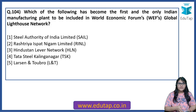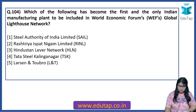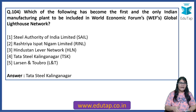Which of the following has become the first and only Indian manufacturing plant to be included in the World Economic Forum's Global Lighthouse Network? It is a conglomeration where all manufacturers are coming together. The answer is Tata Steel Kalinganagar — this is the correct answer.